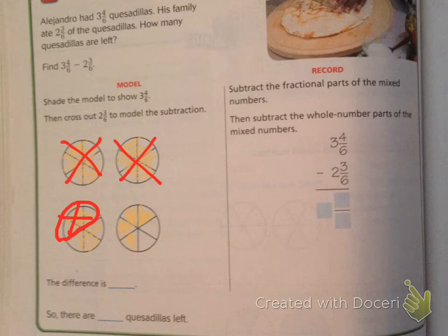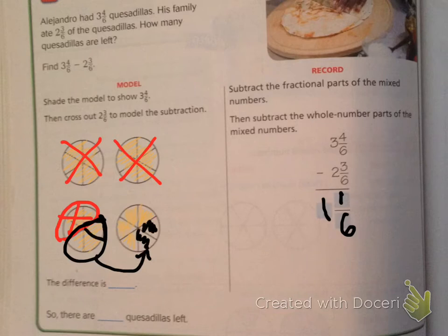Let's go and look over on the record side. You subtract the whole numbers, 3 minus 2 is 1, and then you subtract the numerators, 4 minus 3 is 1/6. If you see over here, if we took these and filled that in, we'd have 1, and then we'd have this last sixth left over. So it'd be 1 and 1/6. So the difference is 1 and 1/6. So there are 1 and 1/6 quesadillas left.